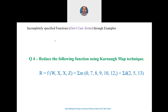Fourth example: Reduce the following function using K-map technique. Output variable R is a function of input variables W, X, Y, and Z, equal to Σm(0,7,8,9,10,12) + Σd(2,5,13). For minterms 0, 7, 8, 9, 10, and 12, R is 1. For minterms 2, 5, and 13, R is don't care. Draw the four-variable K-map and substitute 1 and d for the appropriate minterms.